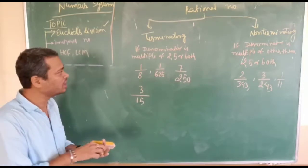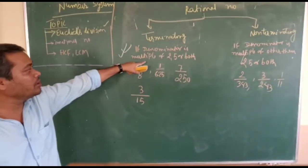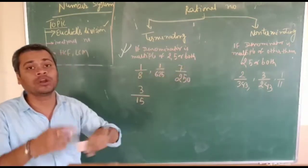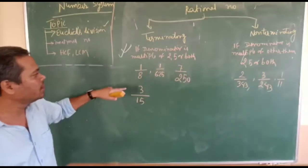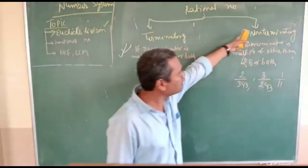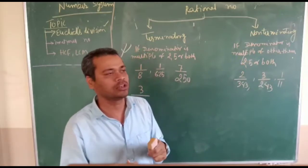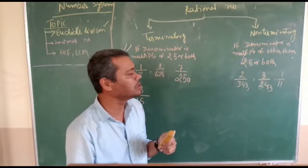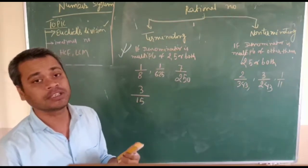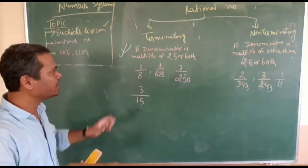Very simple rule. Here is the rule: by seeing any fraction, if you see that the denominator is a multiple of 2 only, 5 only, or a multiple of both, then the number is terminating. What about non-terminating? The number is non-terminating if the denominator is not a multiple of 2, 5, or both. For example, if the denominator is a multiple of 3, 7, or 11, then the fraction is non-terminating.